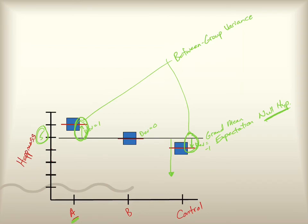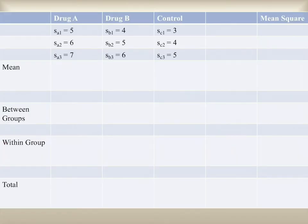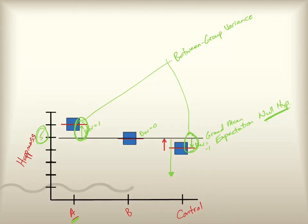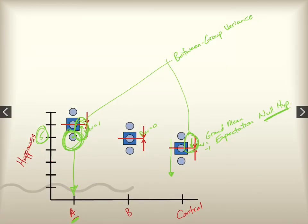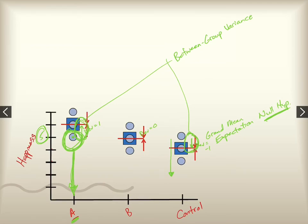Let's go back and look at the numbers one at a time. This is the score for participant number one in drug A — they scored a five on their happiness level. We have three people in that group who scored a five, a six, and a seven. In group B they scored a four, five, and six. In the control group they scored three, four, and five. Those are our observations — this is the data.